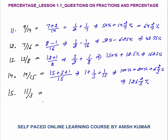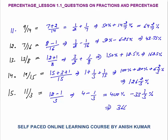11 by 3: break as 12 minus 1 by 3, which gives 4 minus 1/3. 4 means 400% — anything you want to convert to percentage, multiply by 100. 1/3 is 33 and 1/3%. So finally you are left with 400 minus 33 and 1/3, which equals 366 and 2/3% as the final answer.